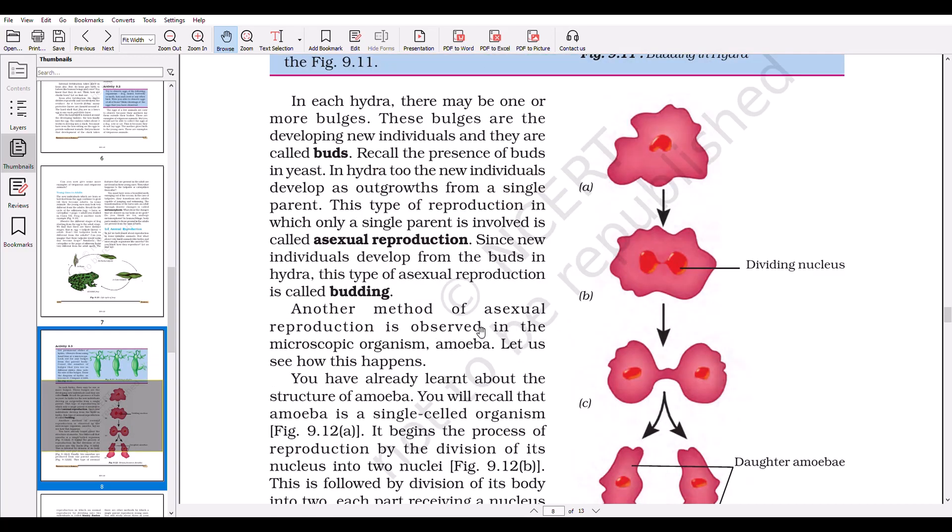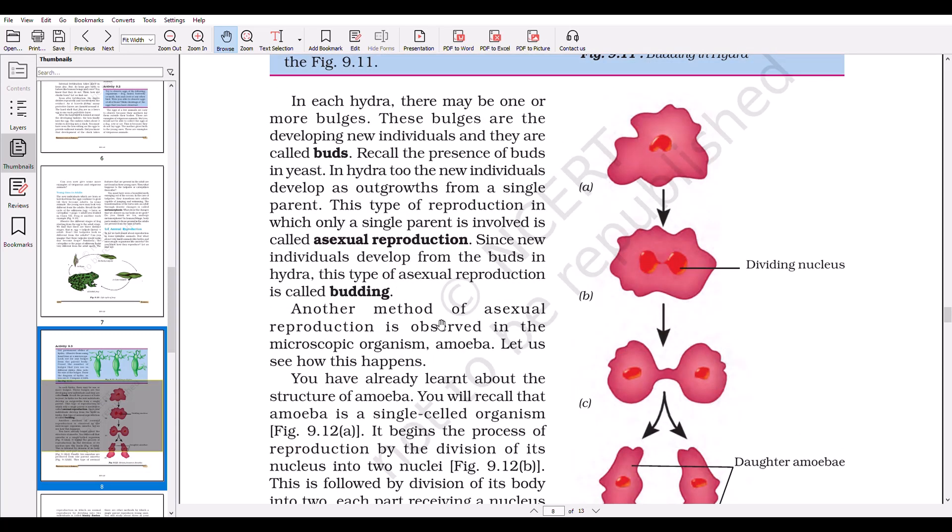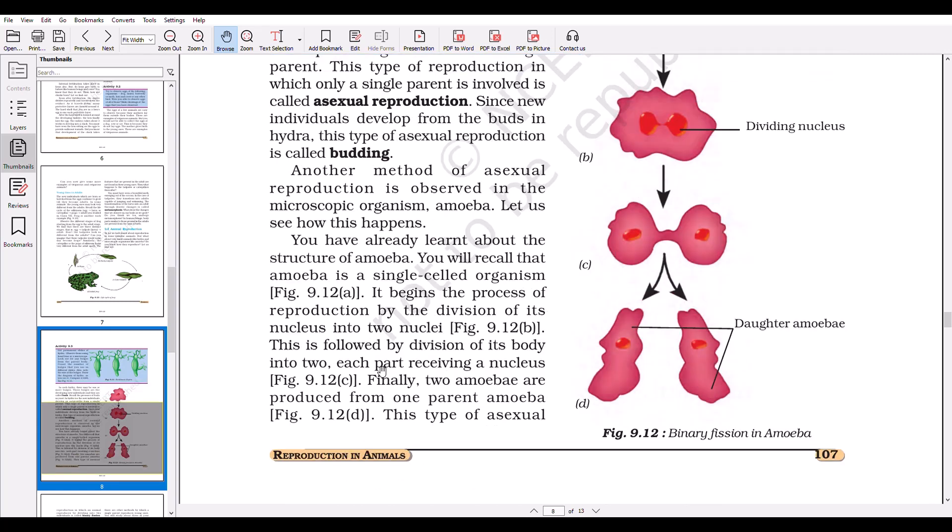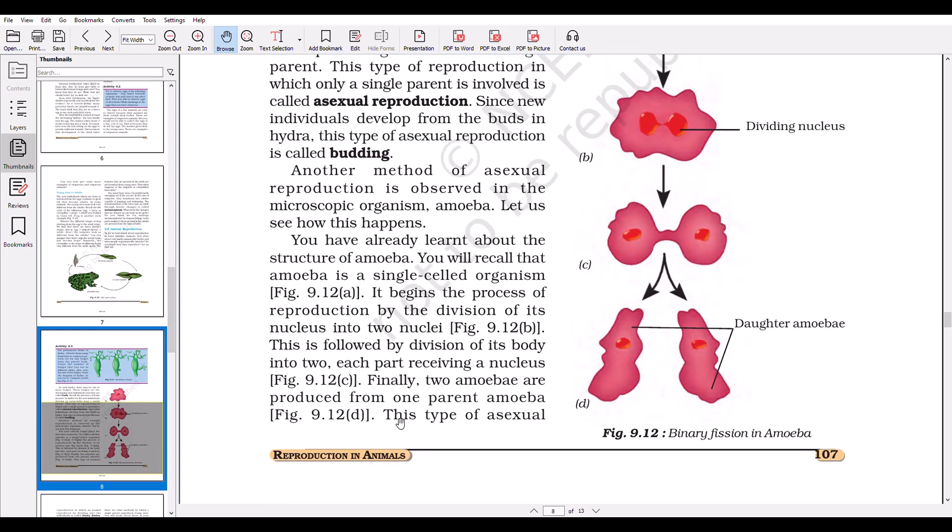Now another method of asexual reproduction which involves a single parent is observed in the case of amoeba. You have already learned about the structure of amoeba. This is an amoeba. It begins the process of reproduction by the division of its nucleus into two nuclei. Here one nucleus is being divided into two nuclei. Finally, two amoebas are produced from one parent amoeba. This is a daughter amoeba. As two amoebas are formed from only one single parent, this fission is known as binary fission. Amoeba is an example of asexual reproduction.